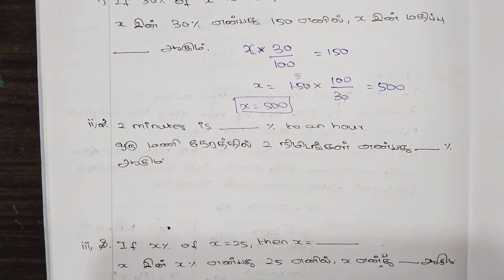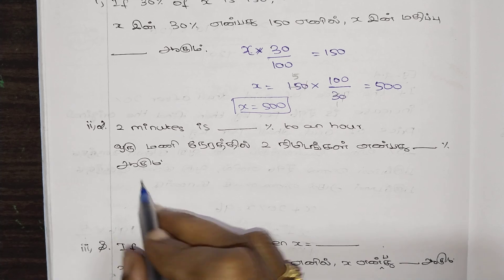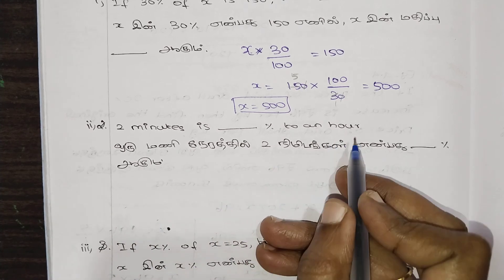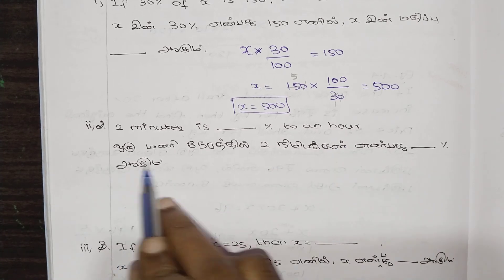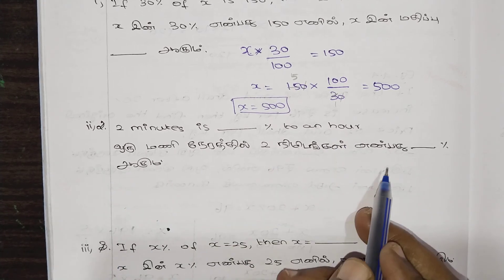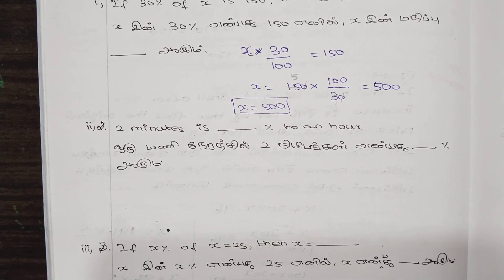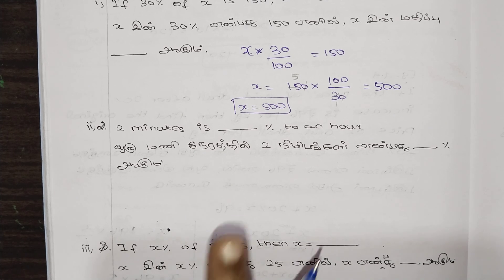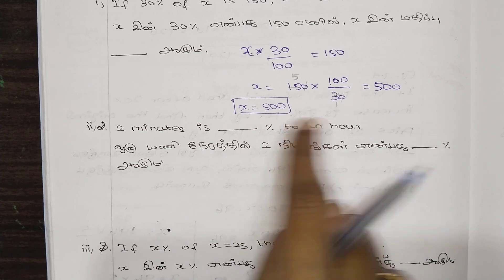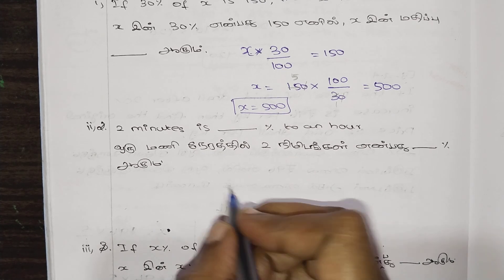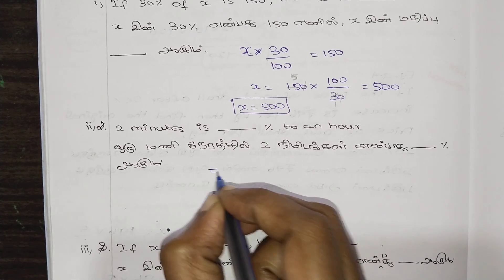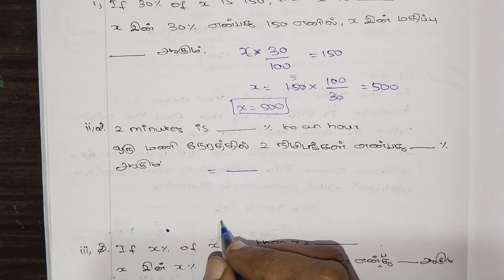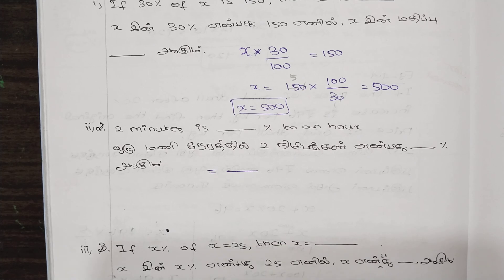Second question: 2 minutes is what percentage of 1 hour? So, 1 hour equals 60 minutes. We need to express 2 minutes as a percentage of 60 minutes.